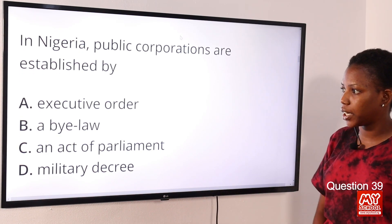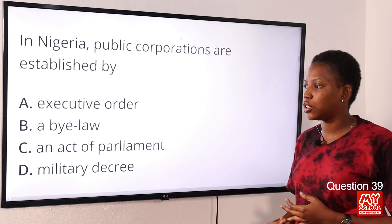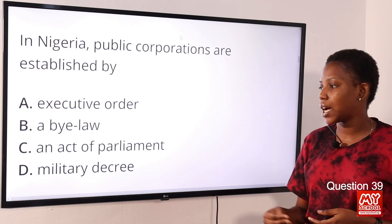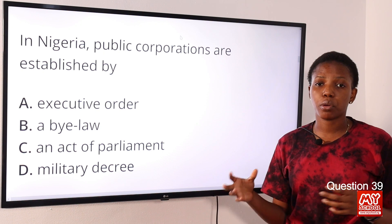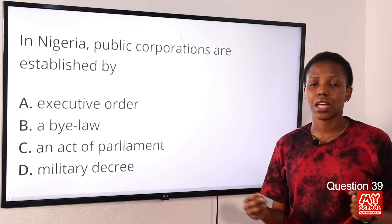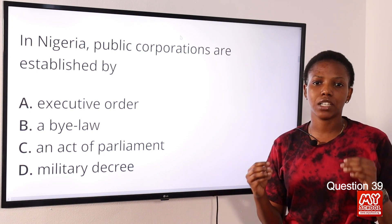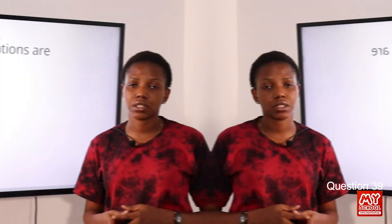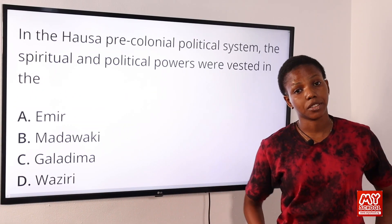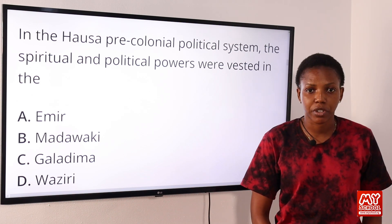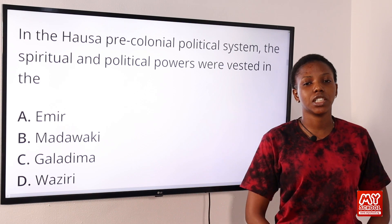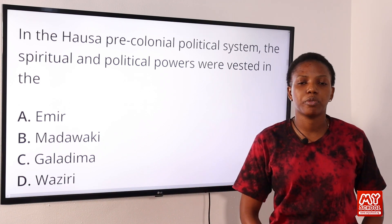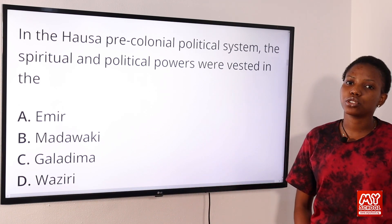Question 39: In Nigeria, public corporations are established by — Option A: executive order. Option B: a bylaw. Option C: an act of parliament. Option D: military decree. The answer is Option C, an act of parliament. A public corporation is a form of public enterprise created as a self-governing unit by a special decree or an act of parliament. If you have questions, use the link in the description to visit the MySchool website and ask as many questions as possible — solutions will be provided within a short period of time.